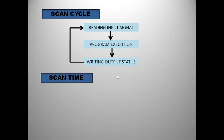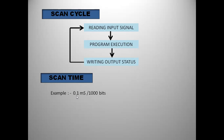Scan time is the time taken for one scan cycle. For example, some CPUs take 0.1 milliseconds for 1000 bits — meaning for scanning 1000 instructions or 1000 bits, the scan time is 0.1 milliseconds.